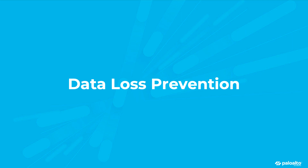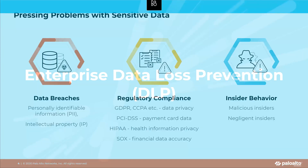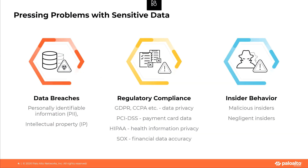With Prisma Access 1.6 we're releasing a great functionality called Enterprise Data Loss Prevention, or DLP. It's a new subscription. DLP is used for big problems that customers have around their data — data breaches, because DLP can identify and classify PII and intellectual property and can stop data exfiltration. It's used for compliance: DLP can assist for GDPR, CCPA, PCI DSS, HIPAA, SOX, and many others. And DLP can also prevent malicious behavior, but also user mistakes exposing sensitive data.